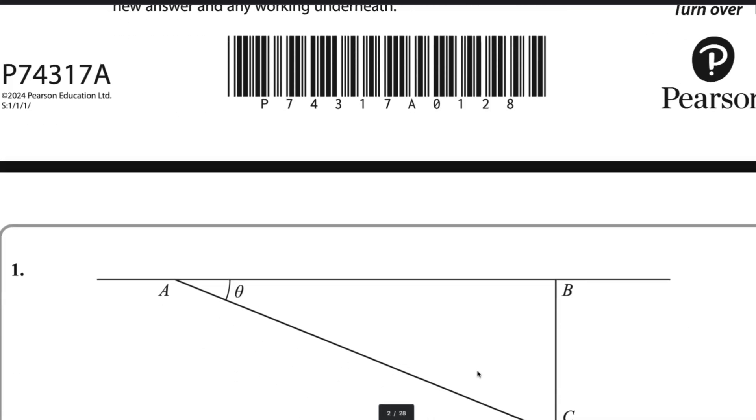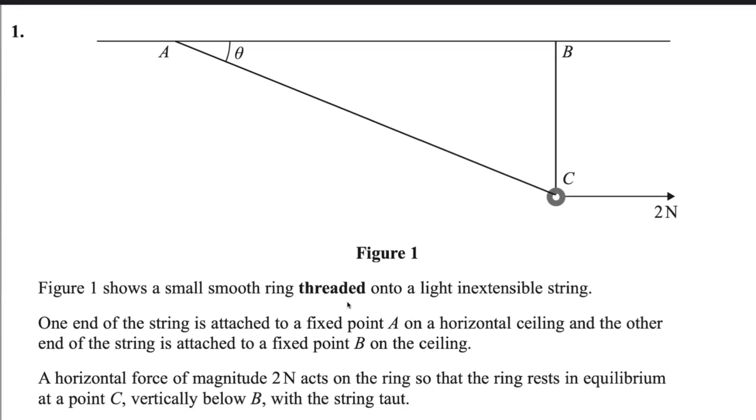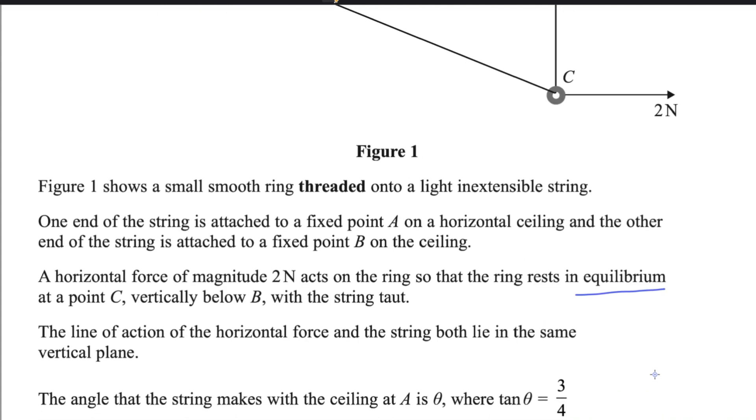Let us start with question number 1. Figure 1 shows a small horizontal ring threaded onto a light inextensible string. One end of the string is attached to fixed point A on horizontal ceiling and other end of the string is attached to fixed point B on the ceiling. A horizontal force of magnitude 2N acts on the ring so that the ring rests in equilibrium at point C vertically below B with the string taut.